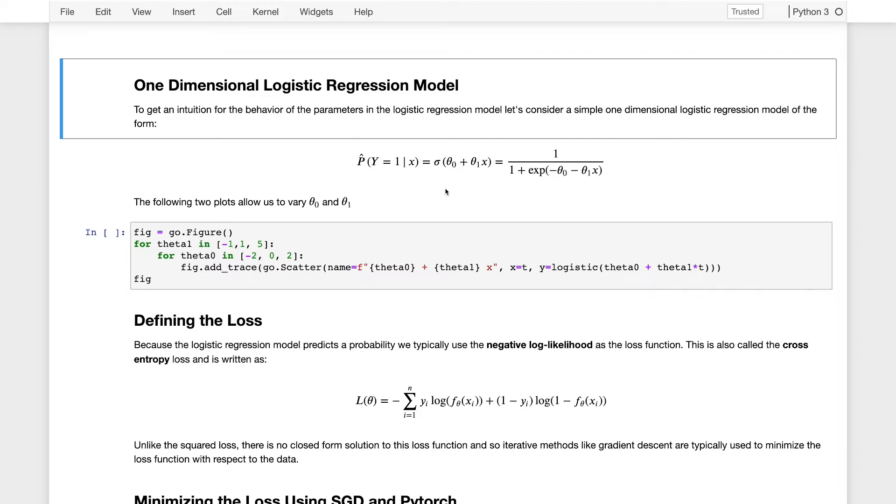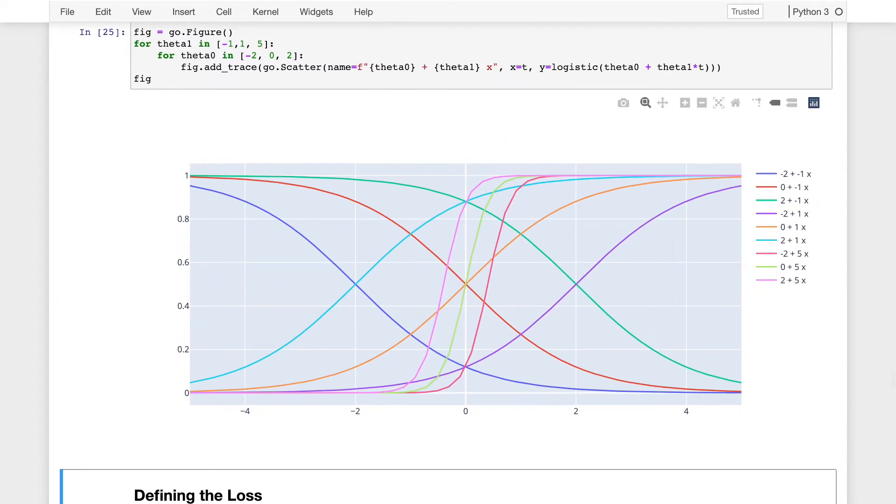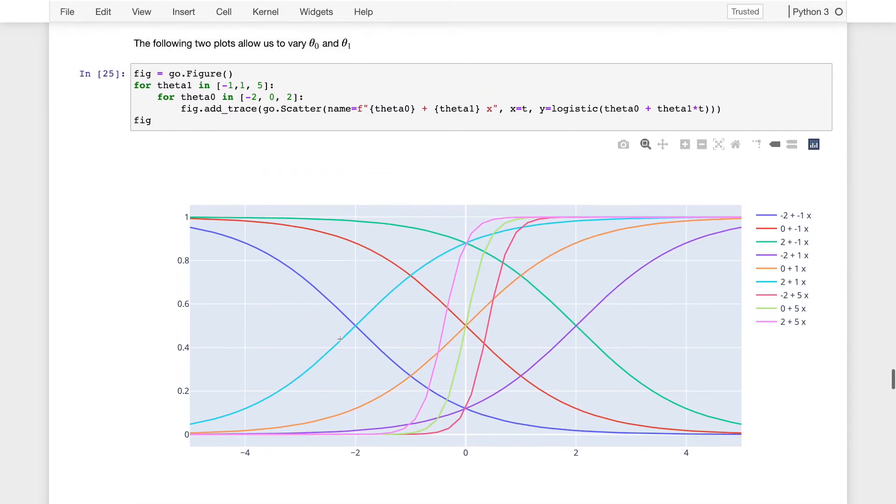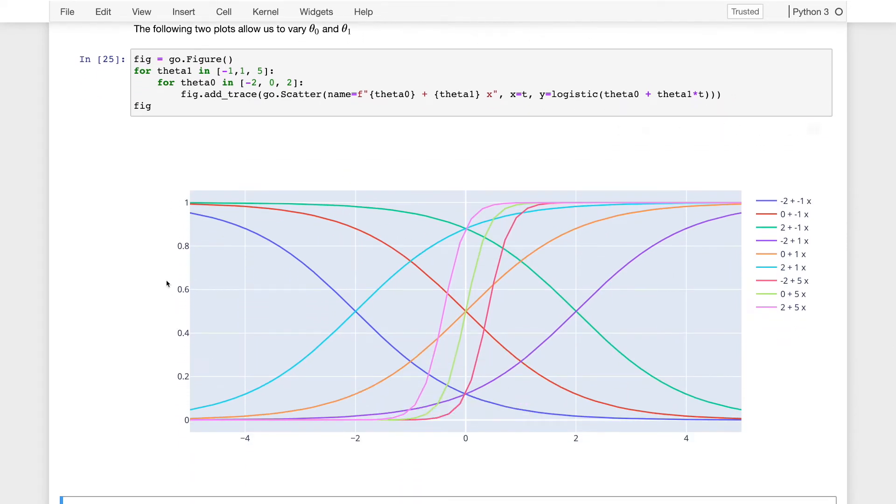I want to plot what happens when I vary the values of theta zero and theta one to get an understanding of how we transform a linear model into something that encodes a probability. I've plotted a number of different values for the theta zero and theta one, and each value is a different line on this plot. The x-axis is the input to this logistic regression model, so this is just the x on the x-axis, and the y-axis is the probability that y equals one given x for different parameterizations of our model.